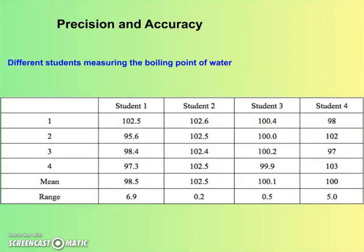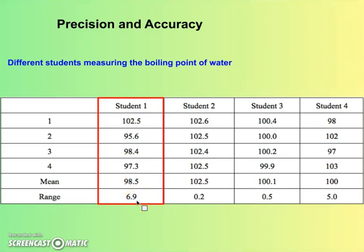Here are results from four students who did an experiment finding the boiling point of water. The true value is 100 degrees Celsius. Student one's average is 98.5 with a range of 6.9 — not very accurate, and not very precise since the data points are all over the place. We'd call that low precision and low accuracy. Student two's results are all above 100 degrees around 102, giving an average of 102.5 — not great for accuracy. But their range is really low, meaning there's not much scatter. This is high precision but low accuracy, suggesting a systematic error.